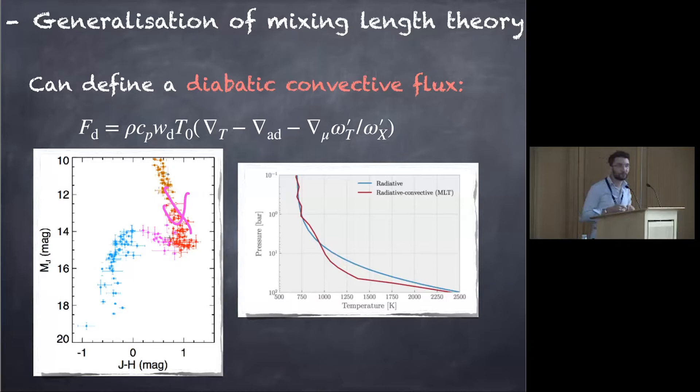So we did that for brown dwarf. And typically with the model, we are able to reduce the temperature gradient as expected. So we see a CO-CH4 radiative convection. So it should work.